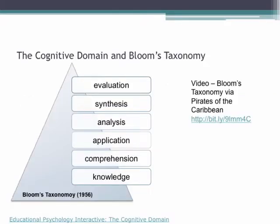Taking the cognitive domain, Bloom created a taxonomy to break it down into different levels. At the bottom is knowledge recall, building up through comprehension, being able to apply, analyse, synthesise, and evaluate knowledge. In the 1950s, Bloom found that about 95% of test questions used to assess student learning only required thinking at the lowest level — knowledge recall — which is why he developed this taxonomy to include higher-level thinking skills.